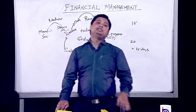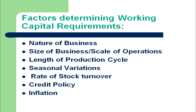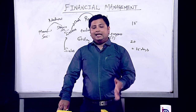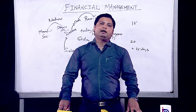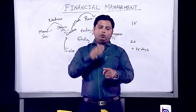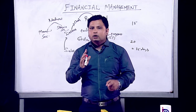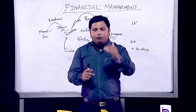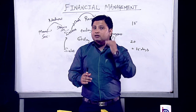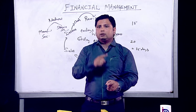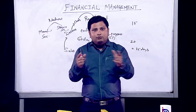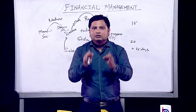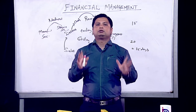The fourth factor is seasonal variations or fluctuations. India is a country of festivals. As per the season, working capital requirements change. In winter, firms producing ACs and refrigerators have low working capital requirements, but firms producing woolen clothes, heaters, and winter goods have high working capital requirements because the season favors their business.